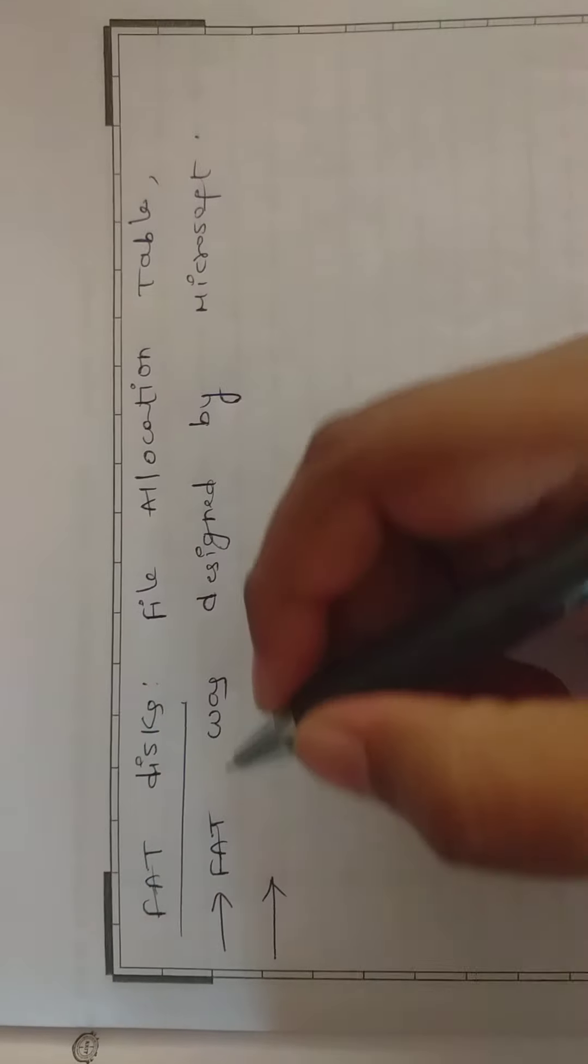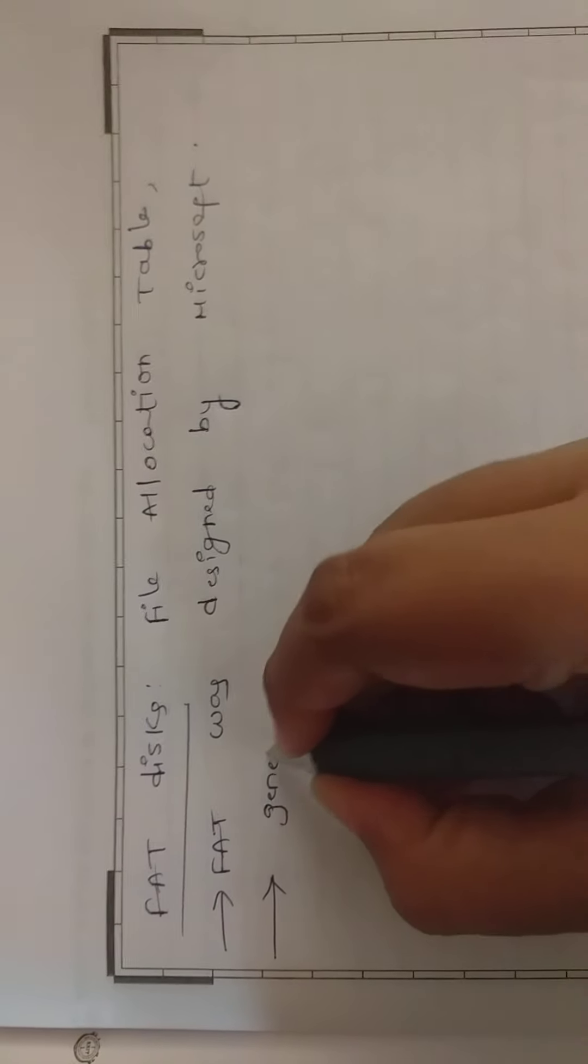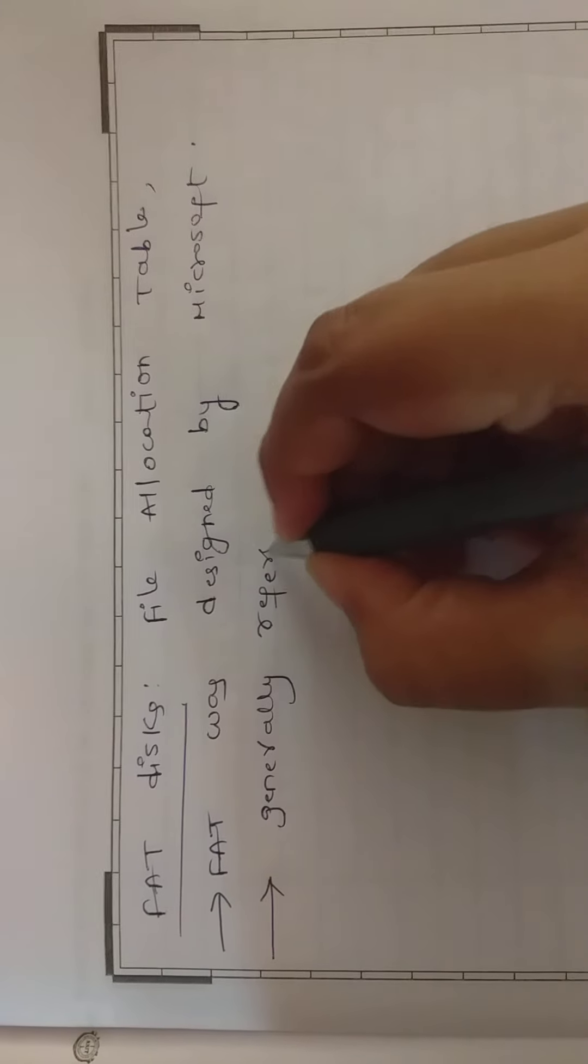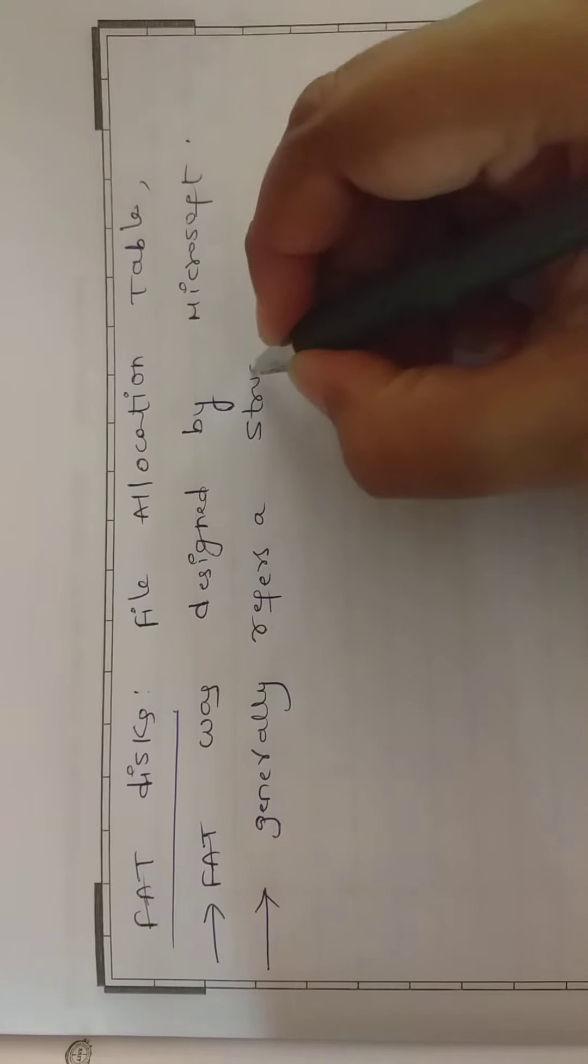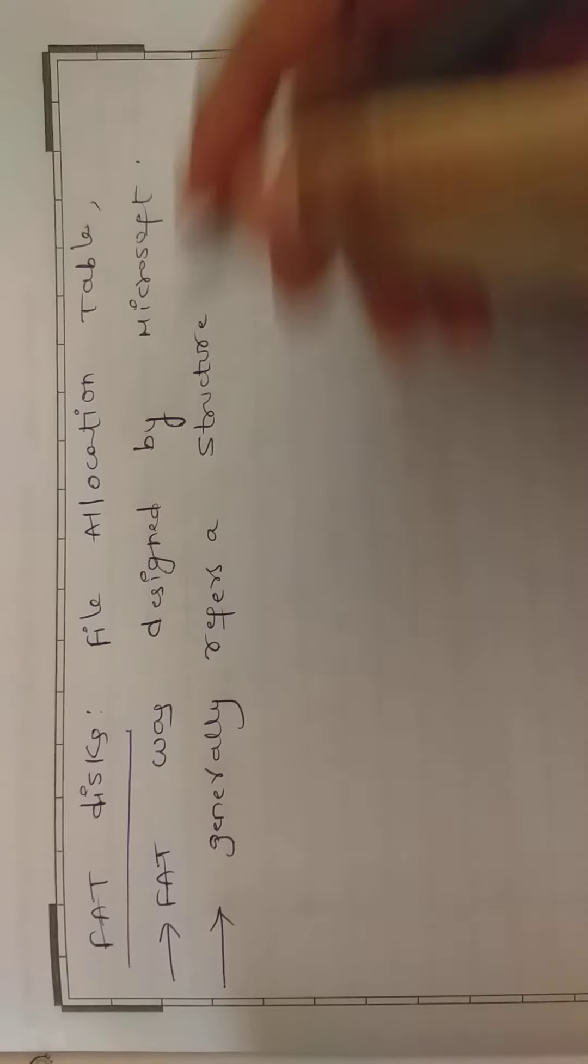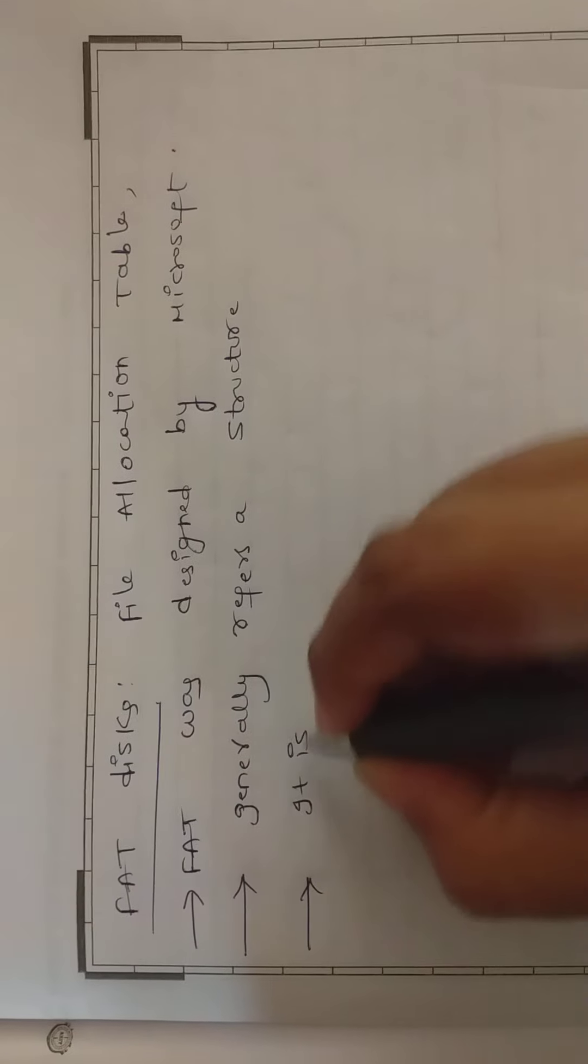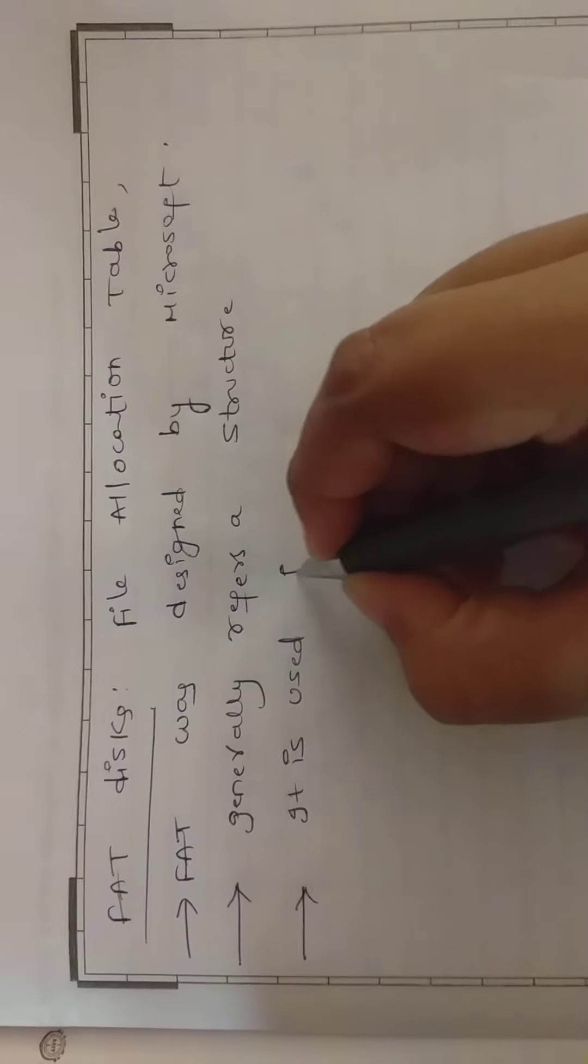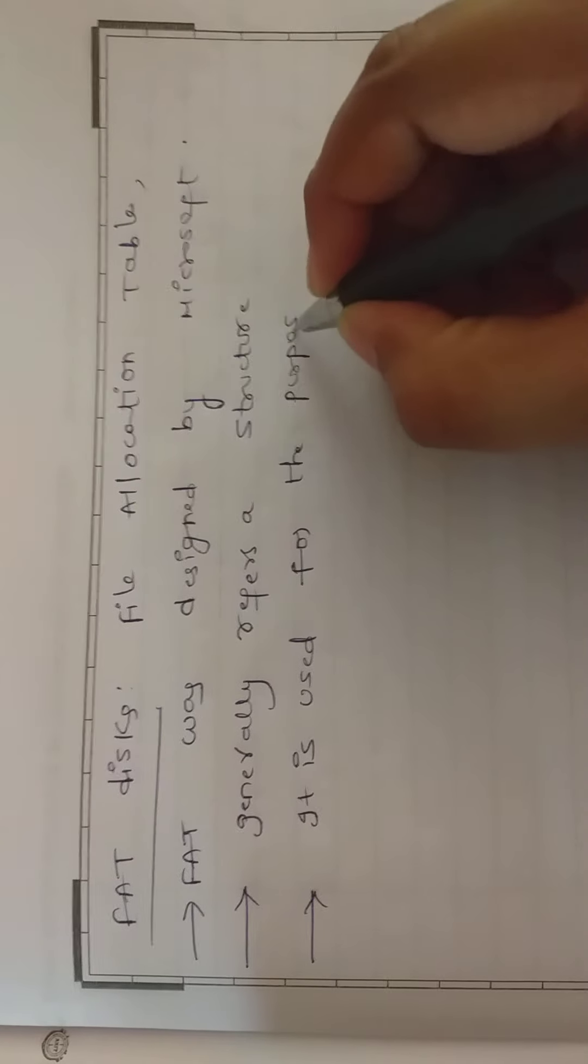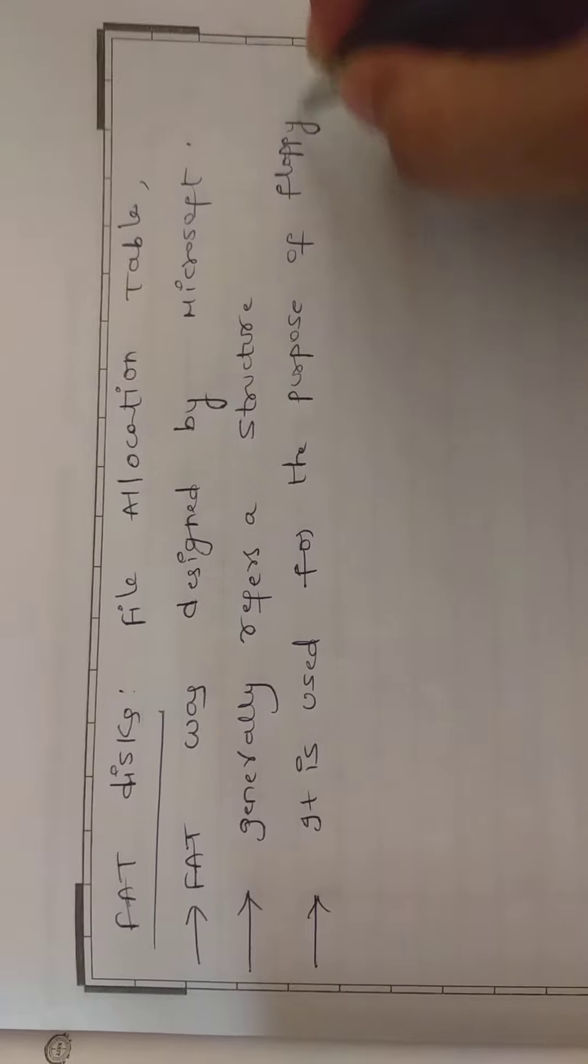Why are we using the FAT disk? Generally, it refers to a structure, a table structure. It is used for the purpose of floppy disk.